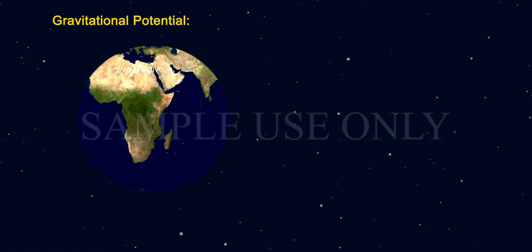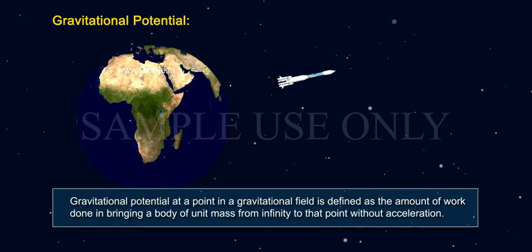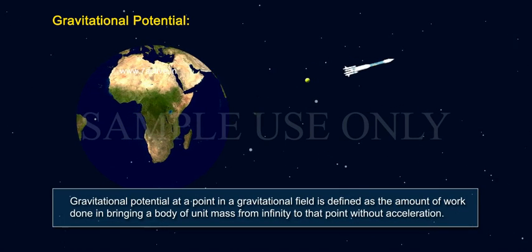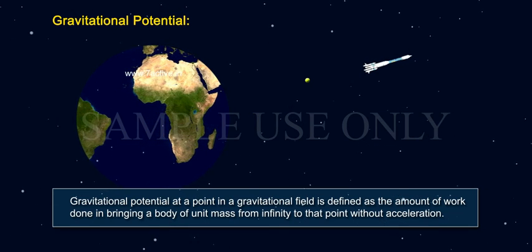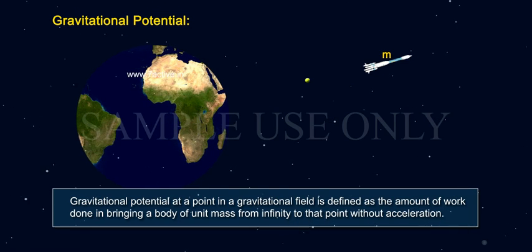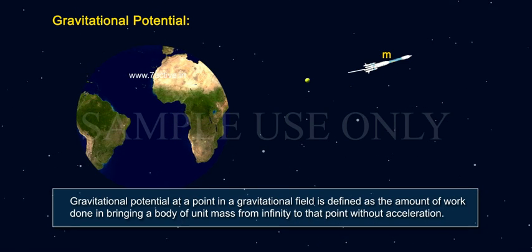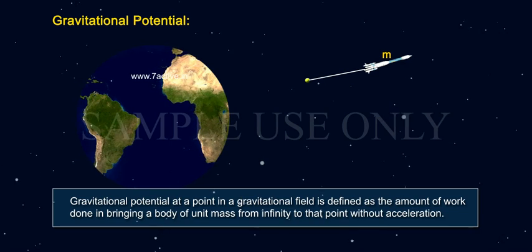Gravitational potential at a point in a gravitational field is defined as the amount of work done in bringing a body of unit mass from infinity to that point without acceleration.